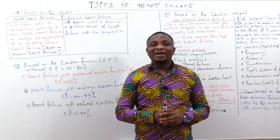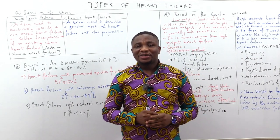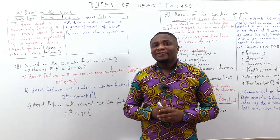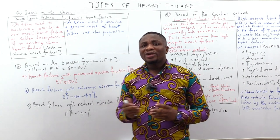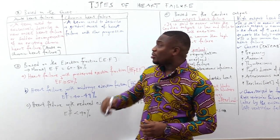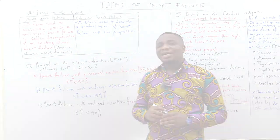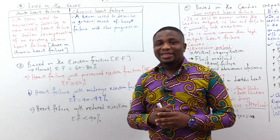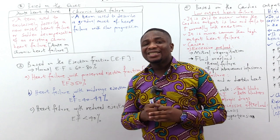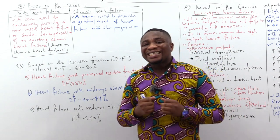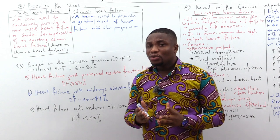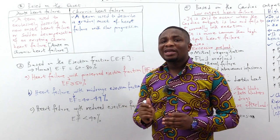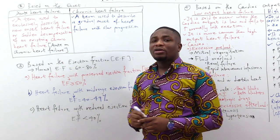Let's move ahead to the next criteria of classification, which is based on onset: acute versus chronic heart failure. Acute heart failure is a term used to exclusively describe a new onset heart failure or a certain decompensation of an existing chronic heart failure. If it describes decompensation of an existing chronic heart failure, we call that acute-on-chronic heart failure.